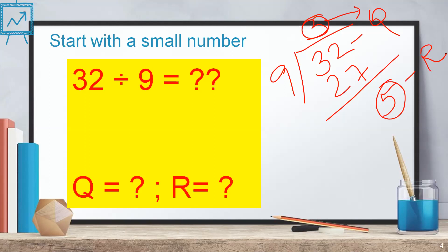But you don't have to do all that written work once you know the easy technique. To write the quotient, write the first digit of your number. To get the remainder, add the first and second digit — it's five. Easy and quick! Division by nine is no longer going to be time consuming after learning this technique.